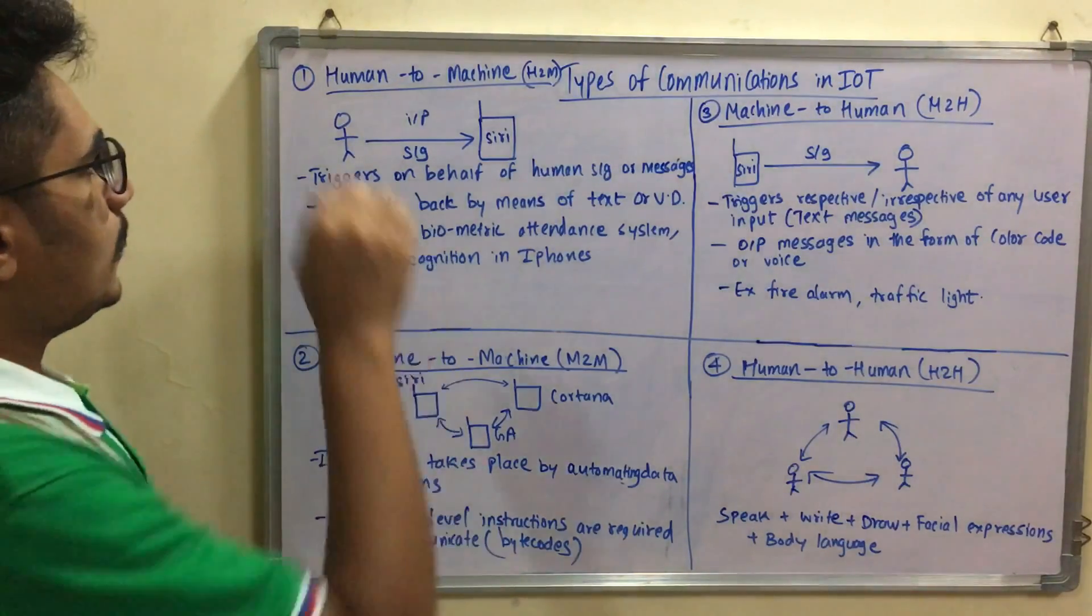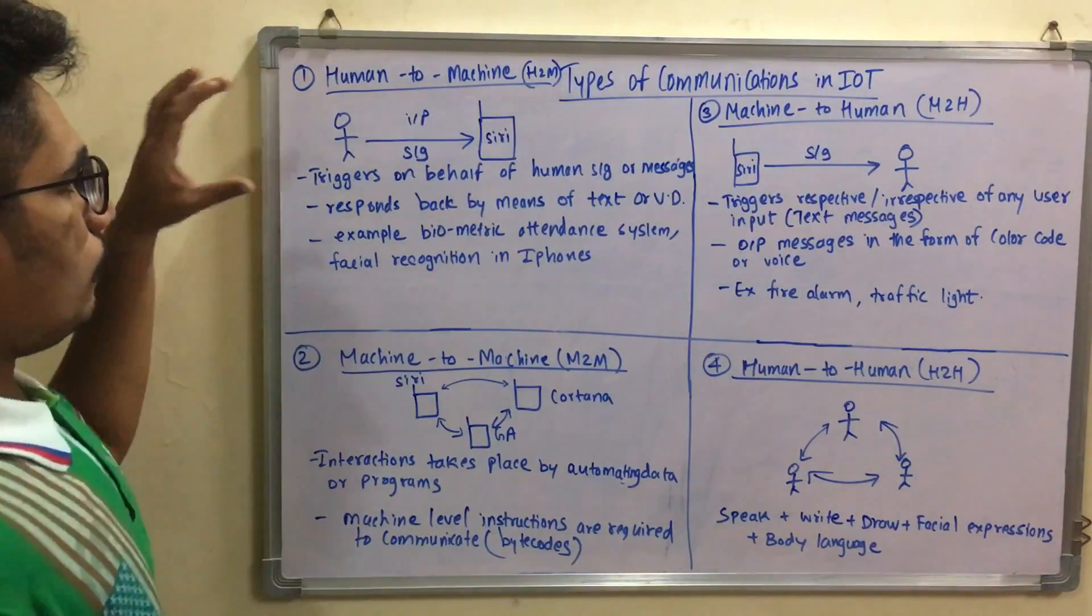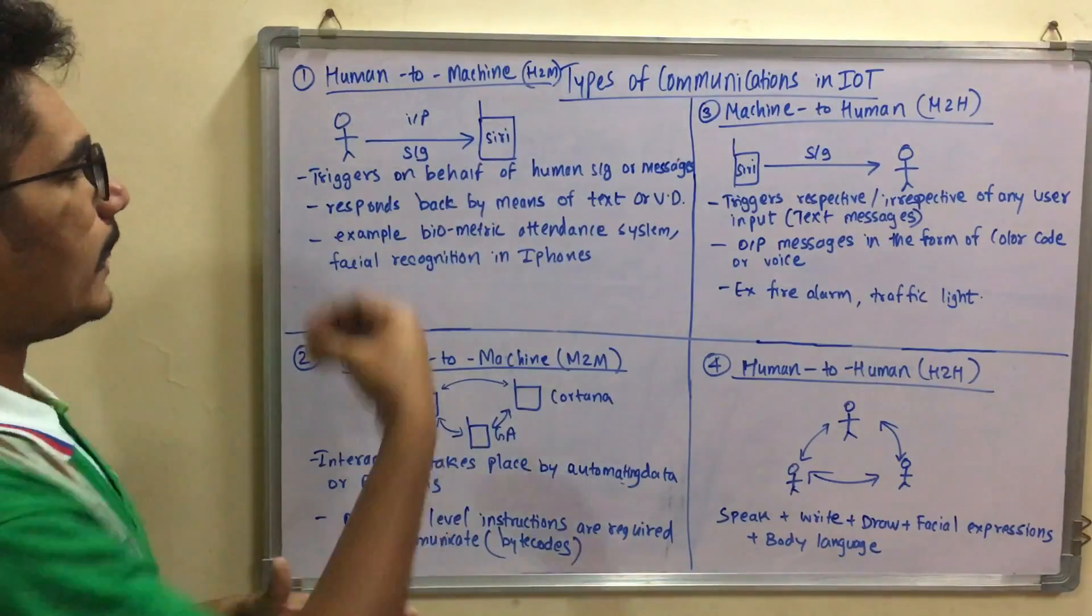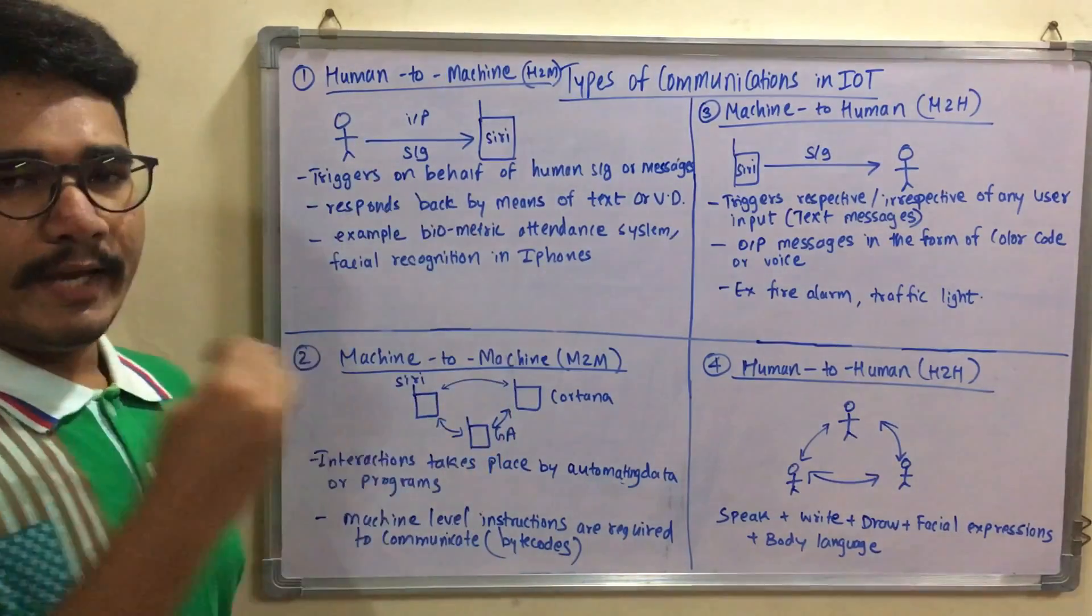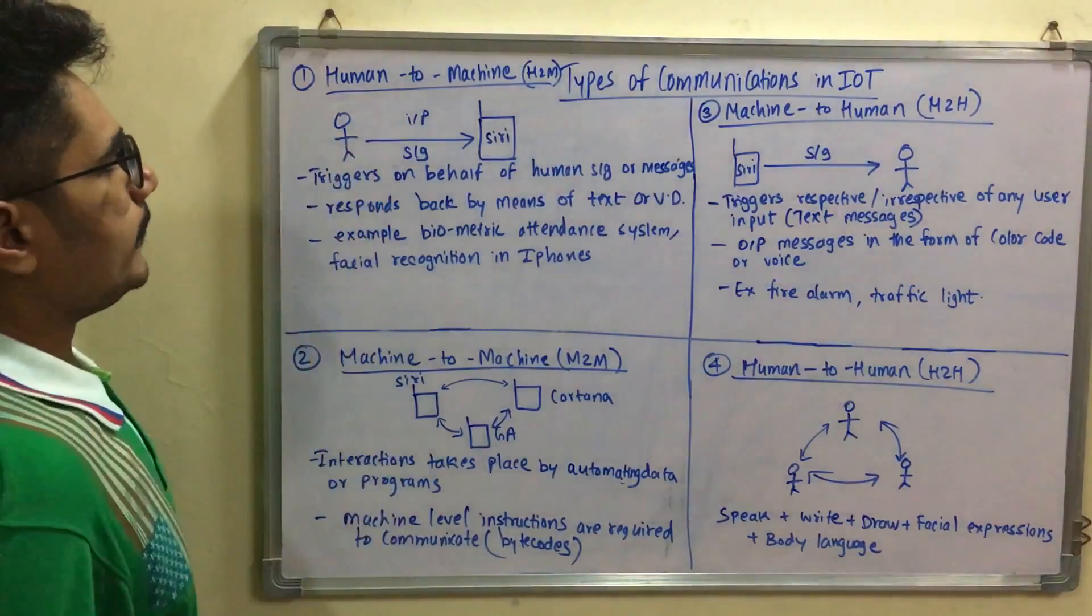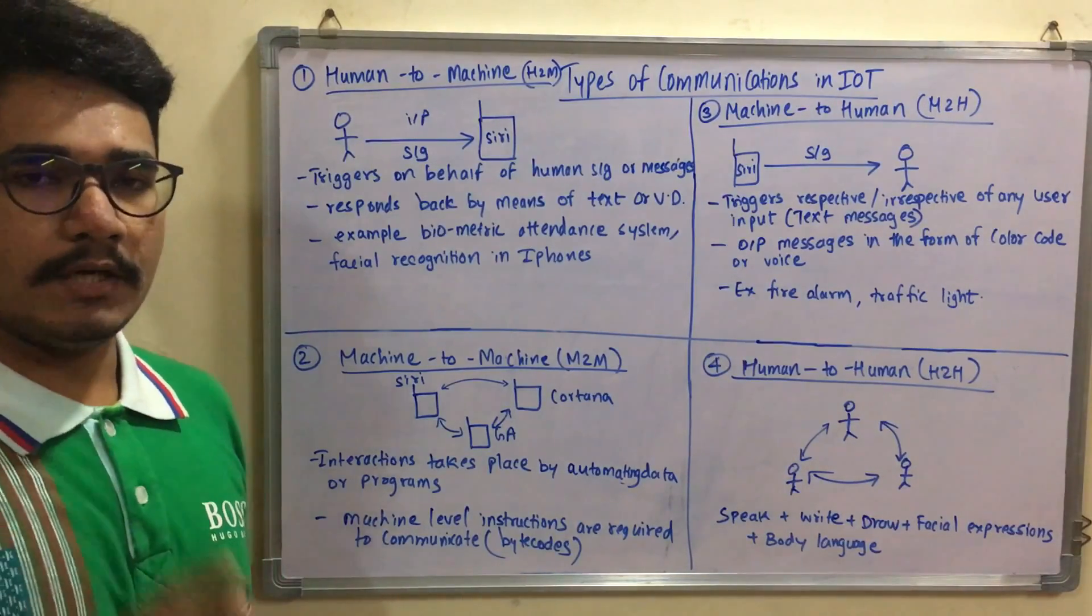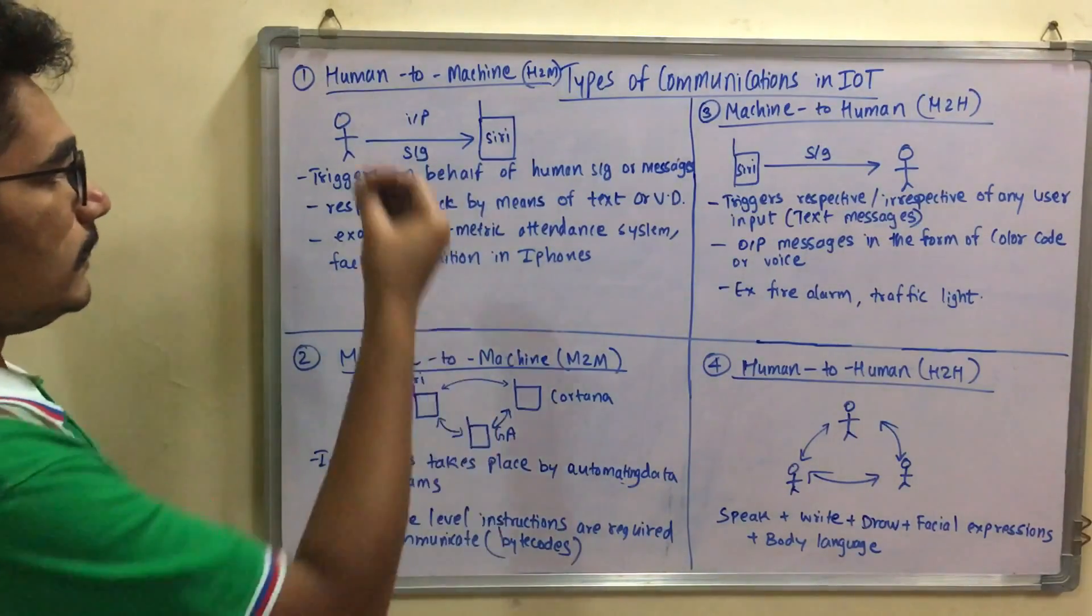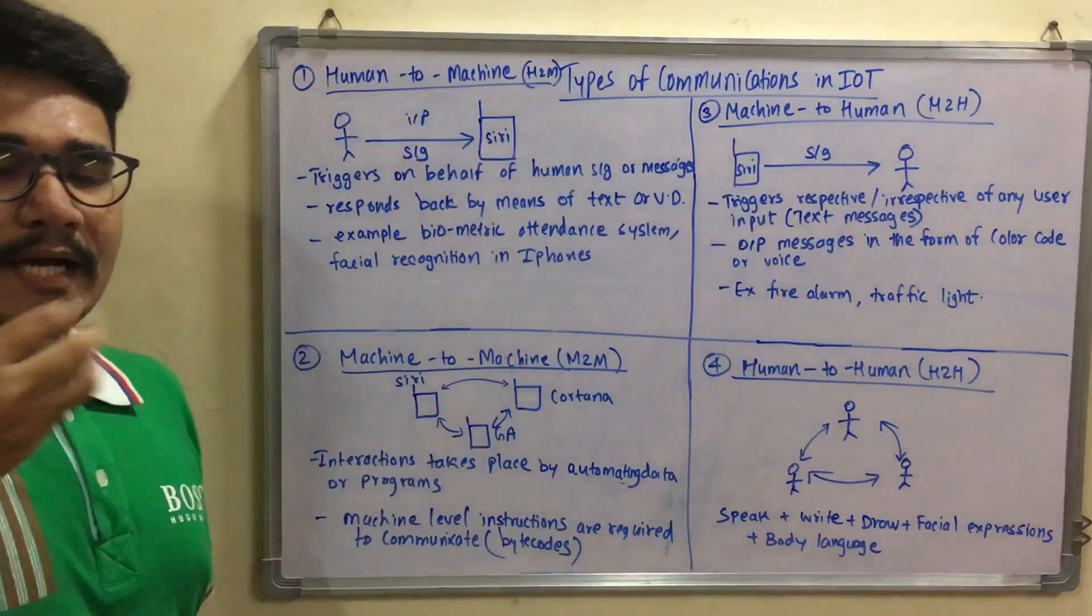The very first type of communication is Human to Machine with code word H2M. We have a human and a device like Siri which has artificial intelligence. IoT devices are all smart, meaning some kind of AI should be incorporated. The human gives some kind of input signal either by text in written format or by means of speech, which is transferred to the device. It understands what is being sent through a compiler inside it, decodes it, and interprets what information the user is expecting.